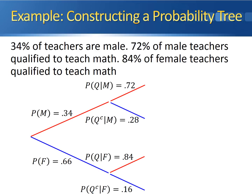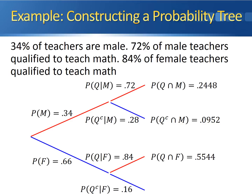Now we can take our marginals and our conditionals and multiply them together to get the joint probabilities for each combination. The probability that a person is qualified and male is 0.34 times 0.72, which gives 0.2448. The probability that a person is not qualified and male is 0.34 times 0.28, which gives 0.0952. The probability of being qualified and female is 0.66 times 0.84, which gives 0.5544. And the probability of not being qualified and being female is 0.66 times 0.16, which gives 0.1056. All four of those joint probabilities sum to 1.